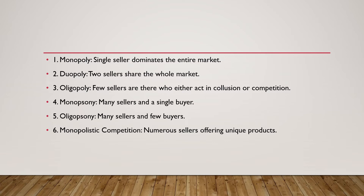Monopoly means a single seller dominates the entire market. Duopoly means two sellers share the whole market. Oligopoly means few sellers who either act in collusion or competition. Monopsony means many sellers and a single buyer. Oligopsony means many sellers and few buyers. Monopolistic competition means numerous sellers offering unique products.